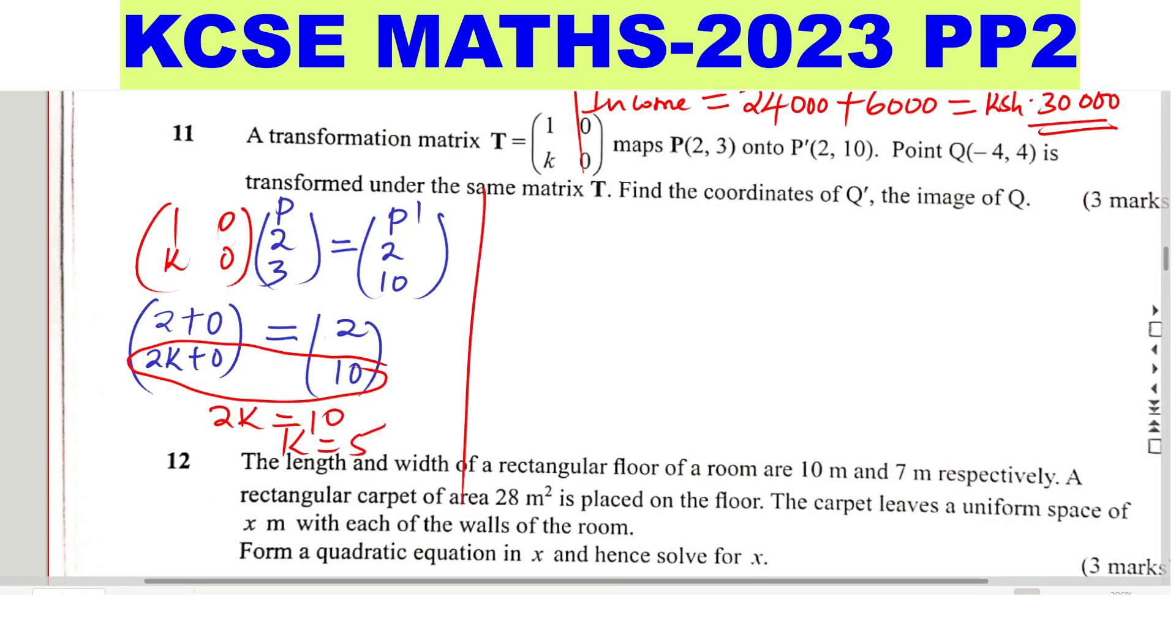So now we have the value of K. So therefore, matrix T now is complete with 1, we substitute K, it's going to be 5, 0, 0. The question is, point Q is transformed under the same matrix, which we have already obtained now T.